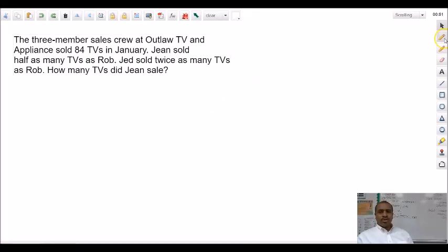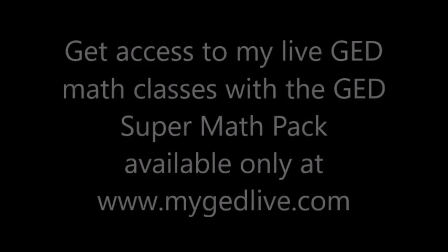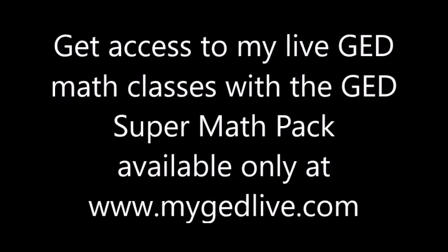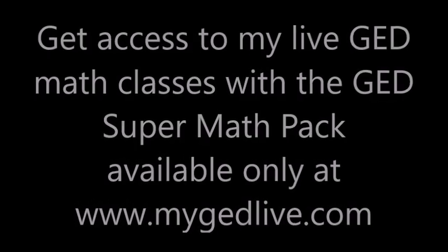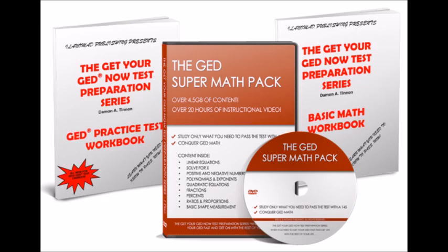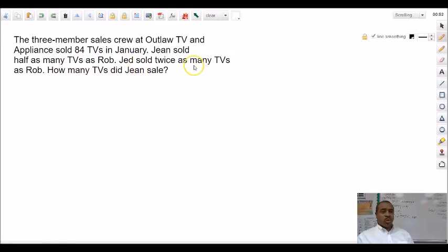So, the three-member sales crew at Outlaw TV and Appliance sold 84 TVs in January. Jean sold half as many TVs as Rob. Jed sold twice as many TVs as Rob. How many TVs did Jean sell?